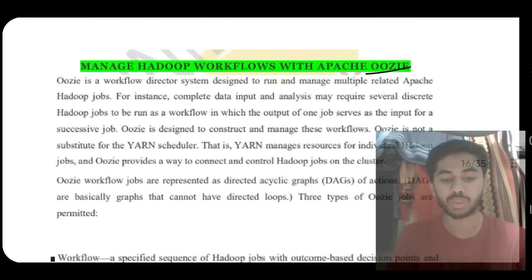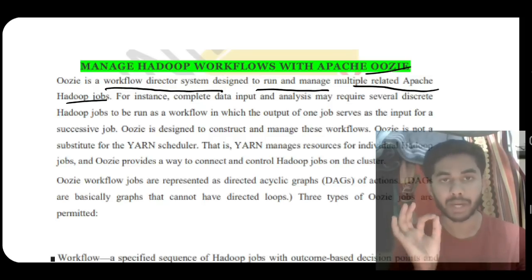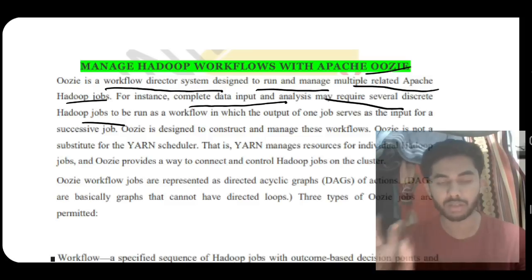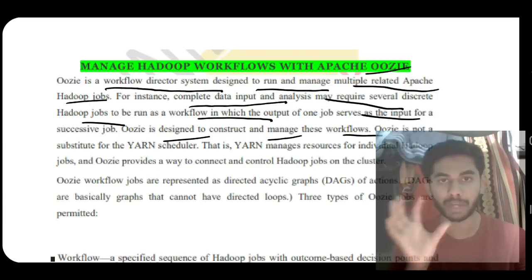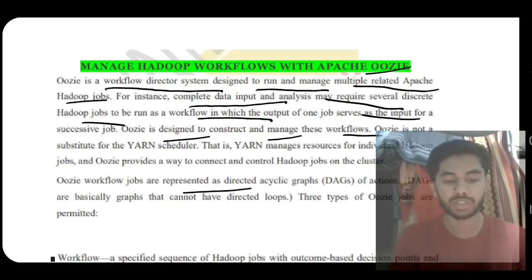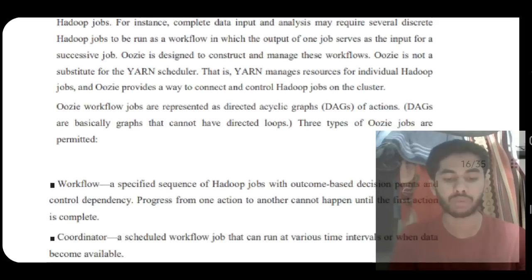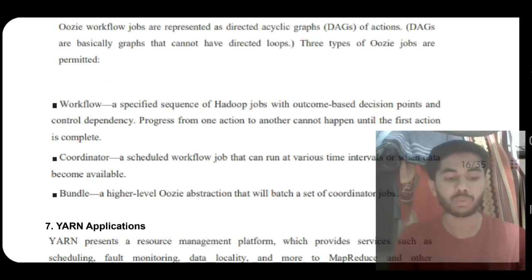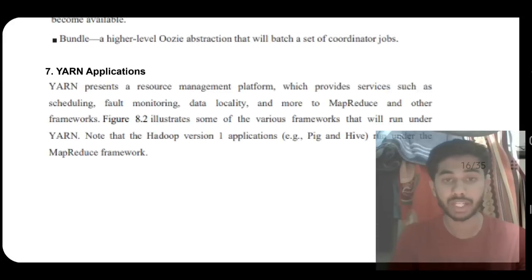What does Oozie do? It is a workflow director system designed to run and manage multiple related Apache Hadoop jobs. The complete data input analysis may require several jobs to run in a workflow. It constructs and manages the workflows of multiple Hadoop jobs. It uses a Directed Acyclic Graph (DAG) of actions. Three works are permitted: workflow, coordinator, and bundle.